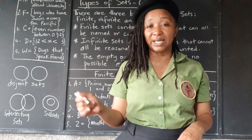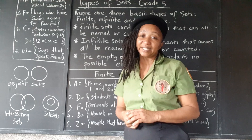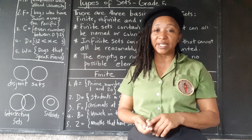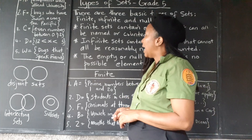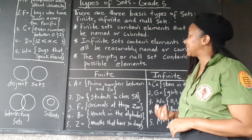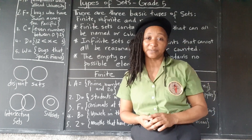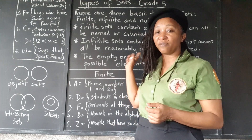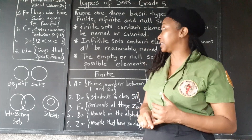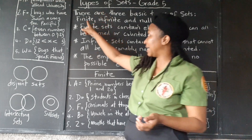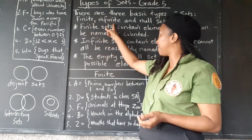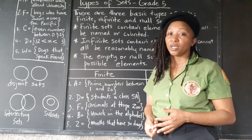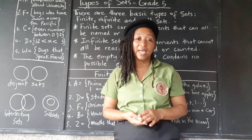We're going to look further at that. A set is a group of things that share at least one trait in common, and there are three basic types of sets. All sets will fall under one of these three categories: either it's going to be a finite set, an infinite set, or a null set. The null set is also called an empty set.